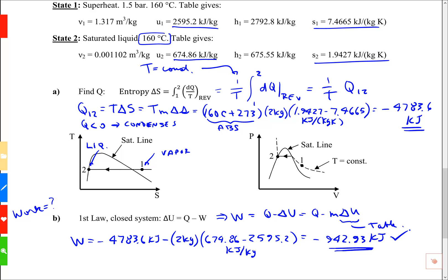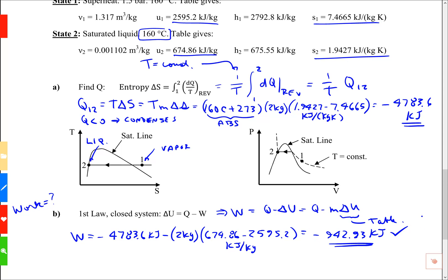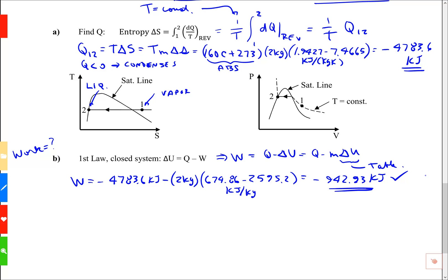And that's responsive to part B. So there's the work. Now the work is negative. That means that the work is done on the system.